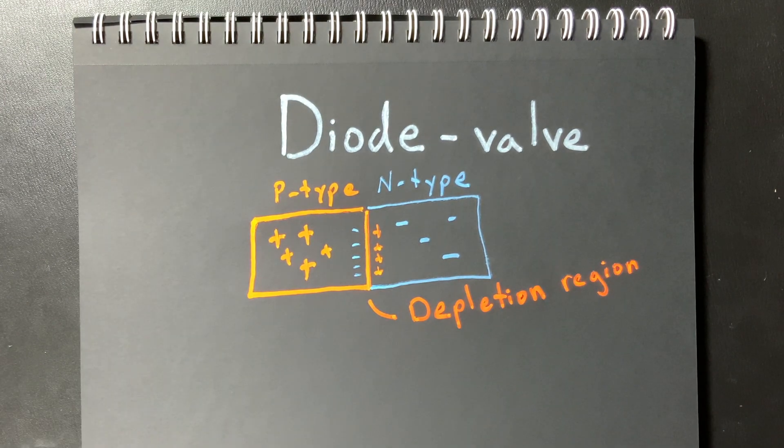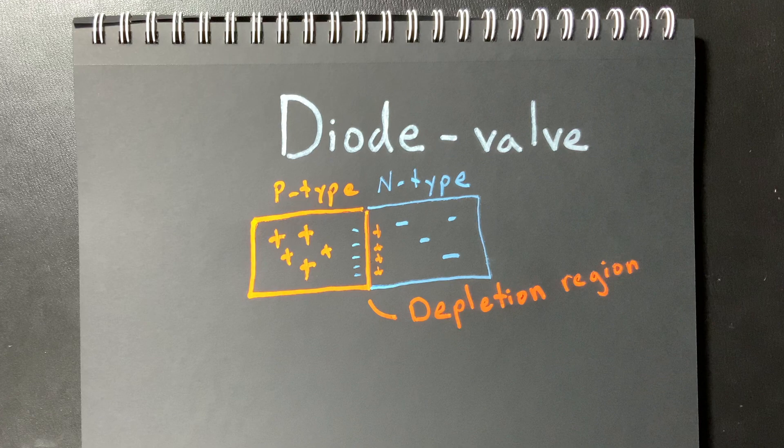And the reason a diode acts like a valve is because of this depletion region. So if we can understand how the valve works we can understand how the diode works and we can probably understand how to test it.